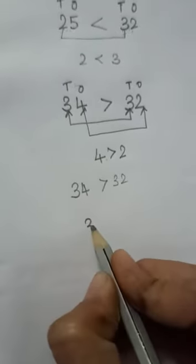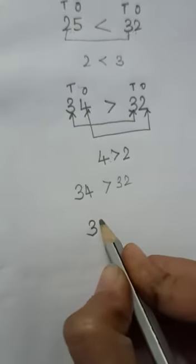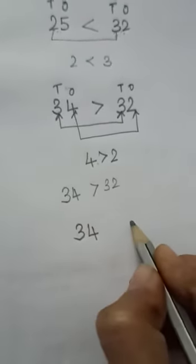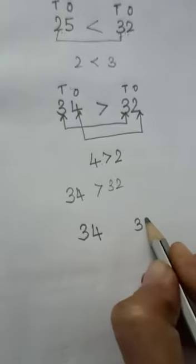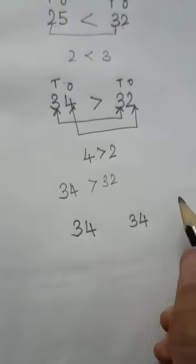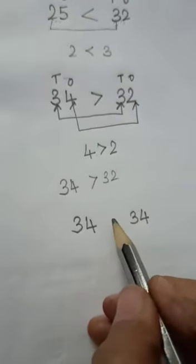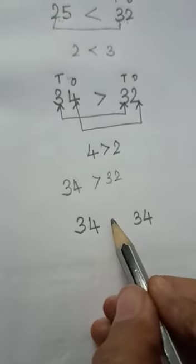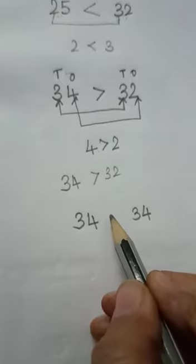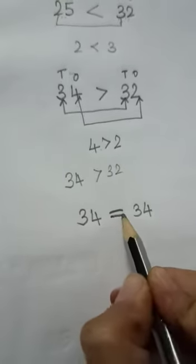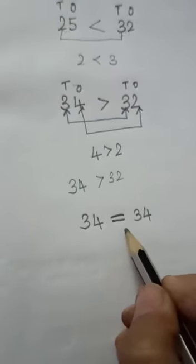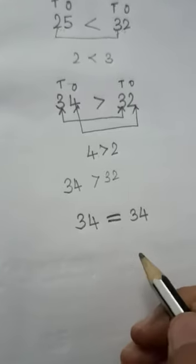If both the numbers are equal on the 10's place and also on the 1's place, which sign will come here? Equals to.